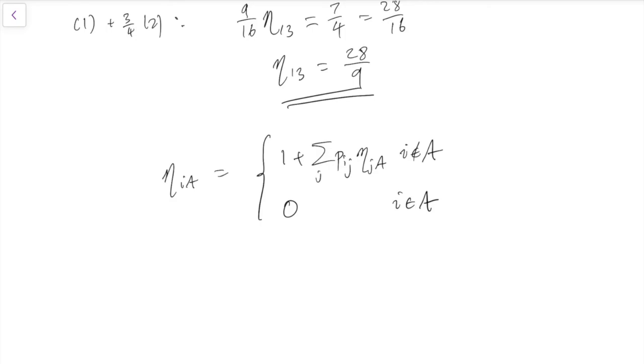So that's hitting times. Condition on the first step, solve some equations. You already know how to do it because we did it for the gambler's ruin.